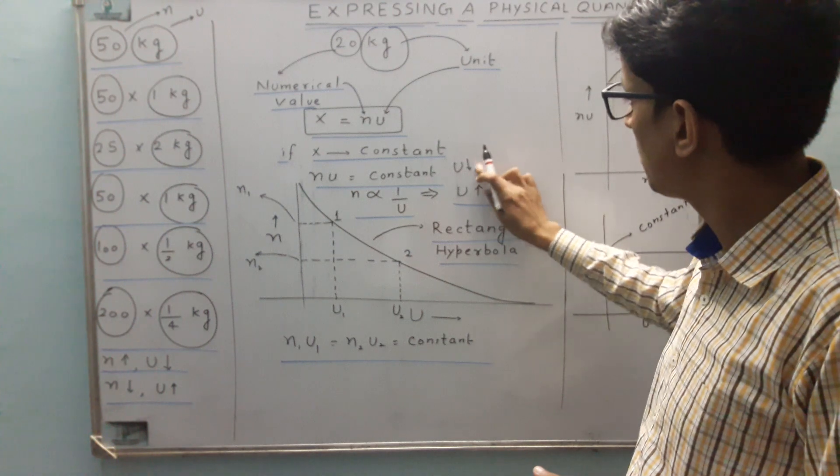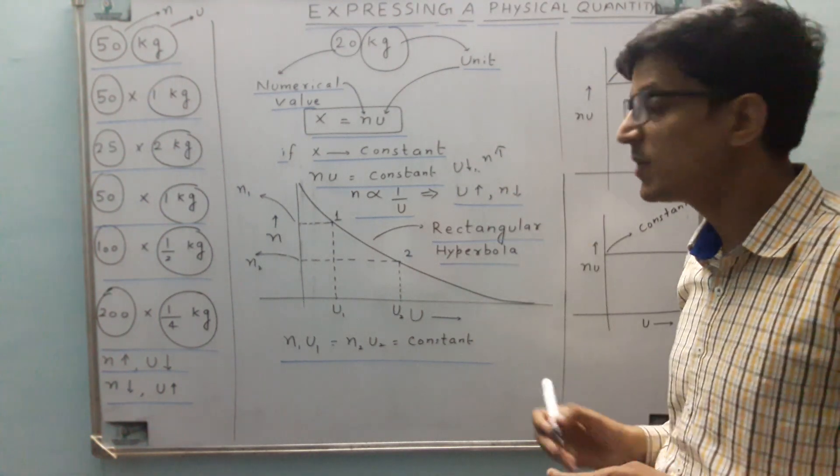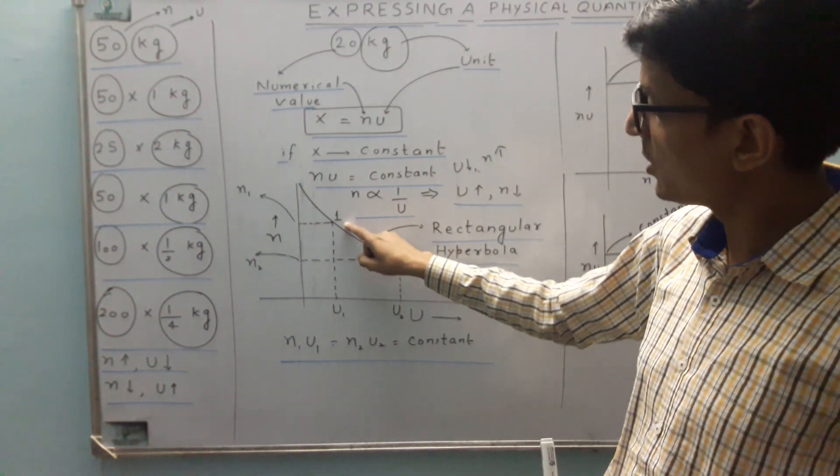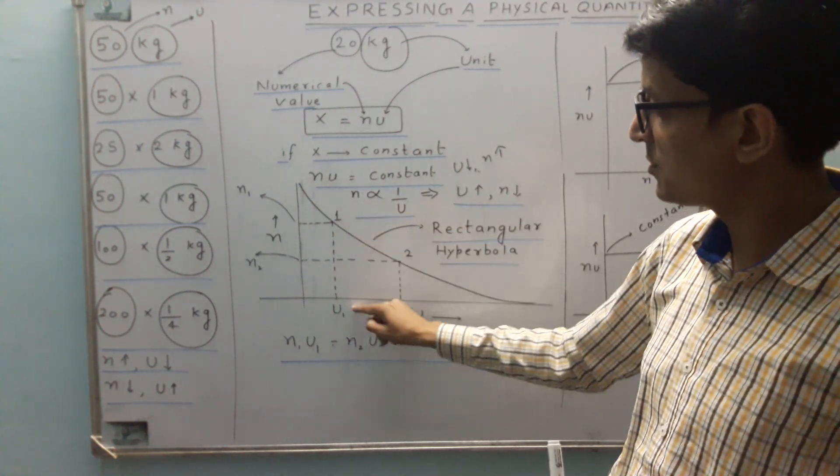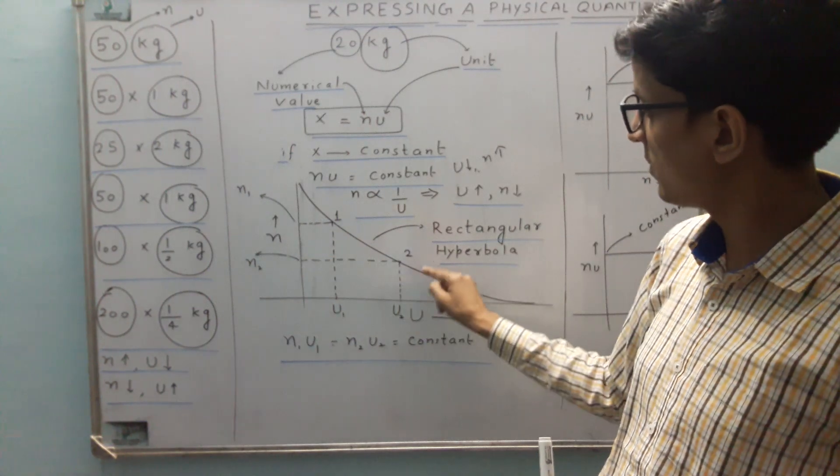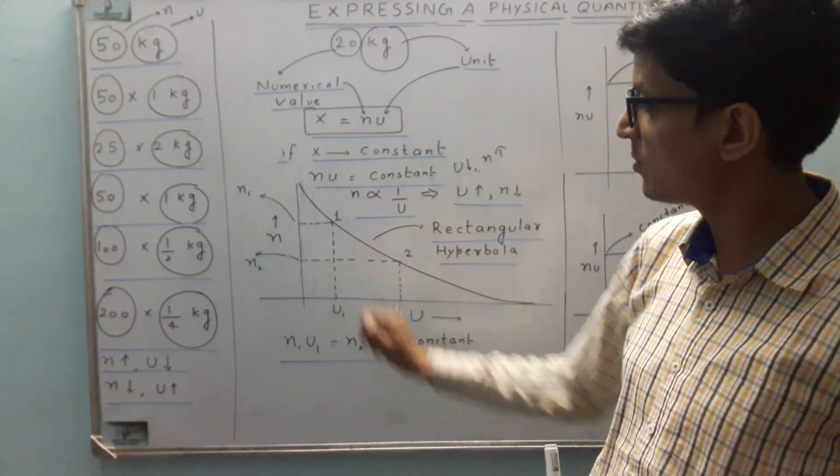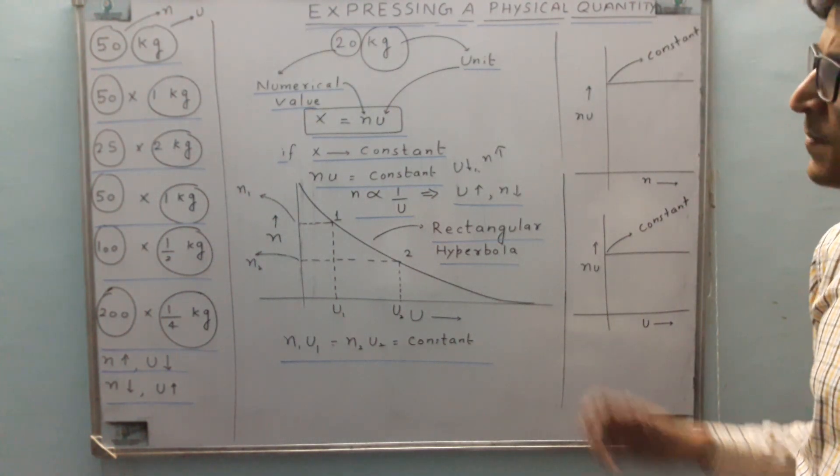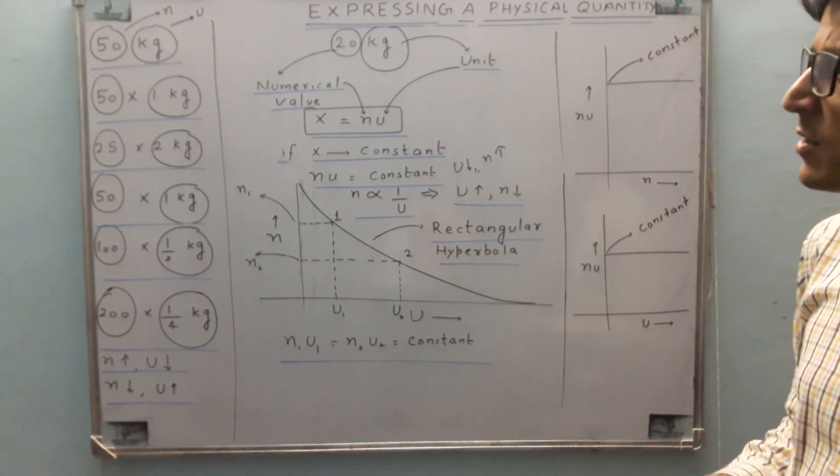The graph will be rectangular hyperbola like that. There are two points on the curve, point 1 and point 2. Point 1 has u coordinate u1, n coordinate n1. Point 2 has u coordinate u2, n coordinate n2. And we have the simple relation n1 u1 is equal to n2 u2 is equal to constant.